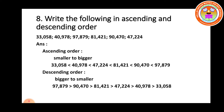Write the following in ascending and descending order. Ascending means smaller to bigger. Descending means bigger to smaller. In ascending order we use the symbol less than, and in descending order we use the symbol greater than.